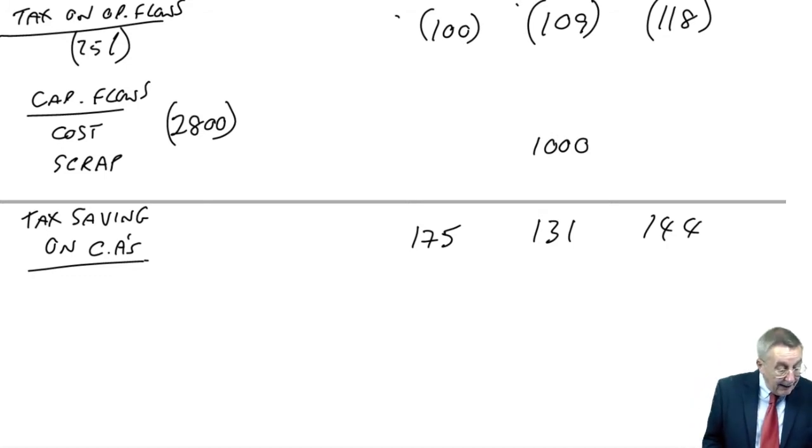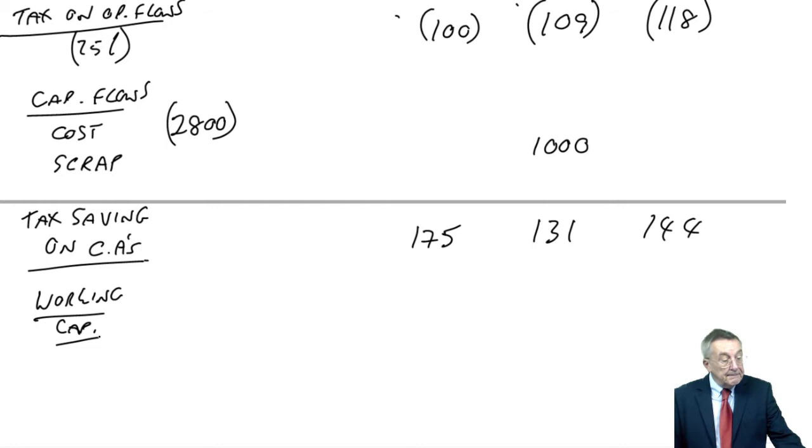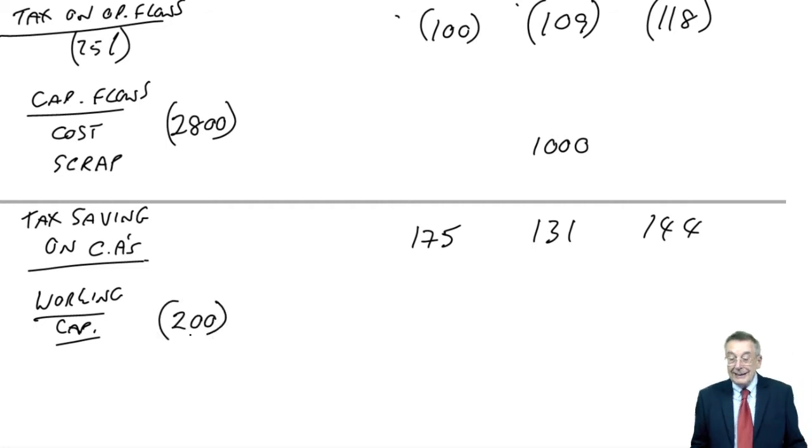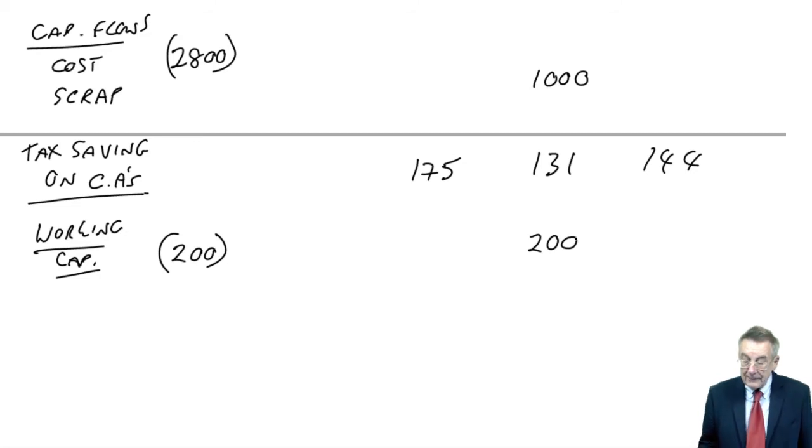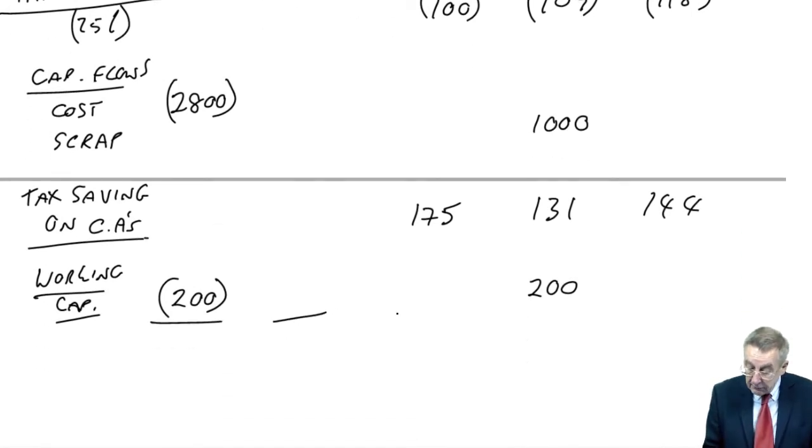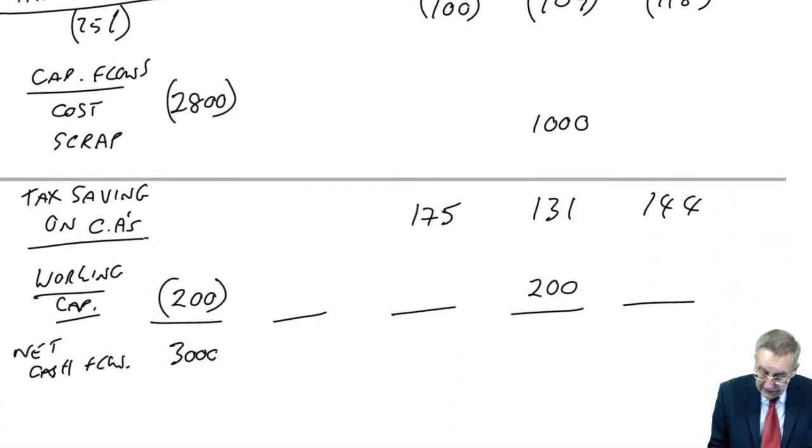All right. The only thing left is, is there any working capital? Oh, have I missed it? Oh, yes, there is. I said before, I always say working capital to the very end because it's no tax effect. And four lines from the bottom, an additional 200 of working capital will be required at the start of the project. So at time zero, an outflow of 200. The project lasted three years. So at the end of three years, at time three, an inflow of 200. And now we've got it.